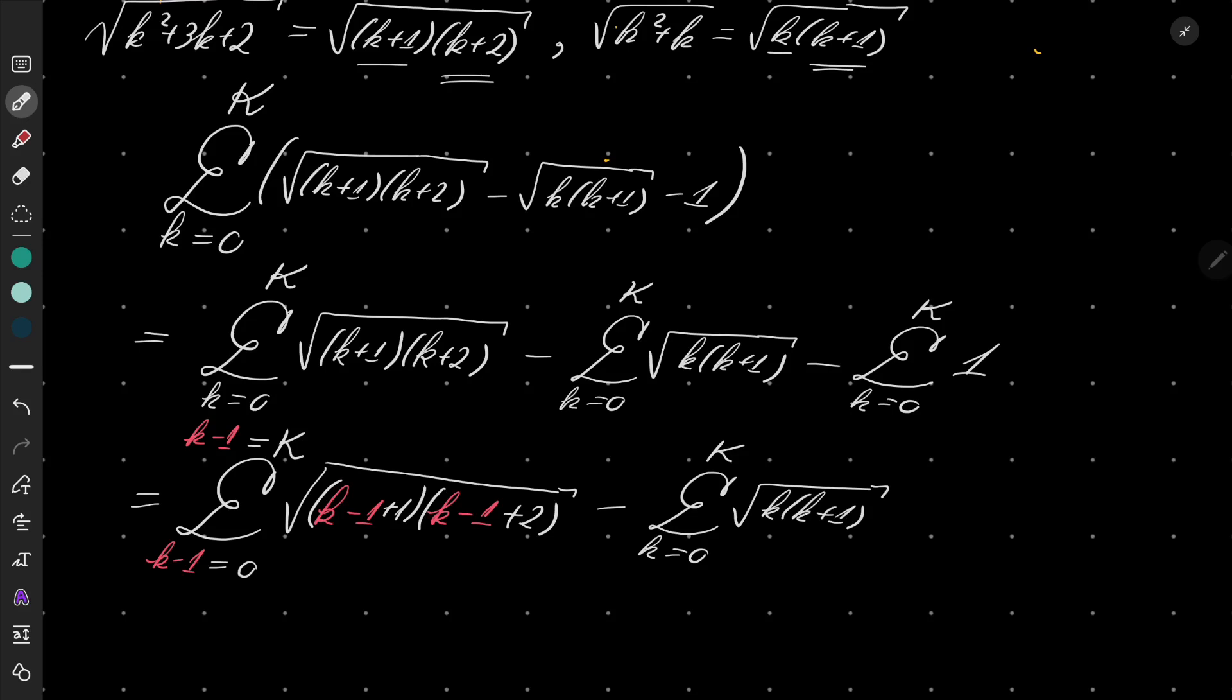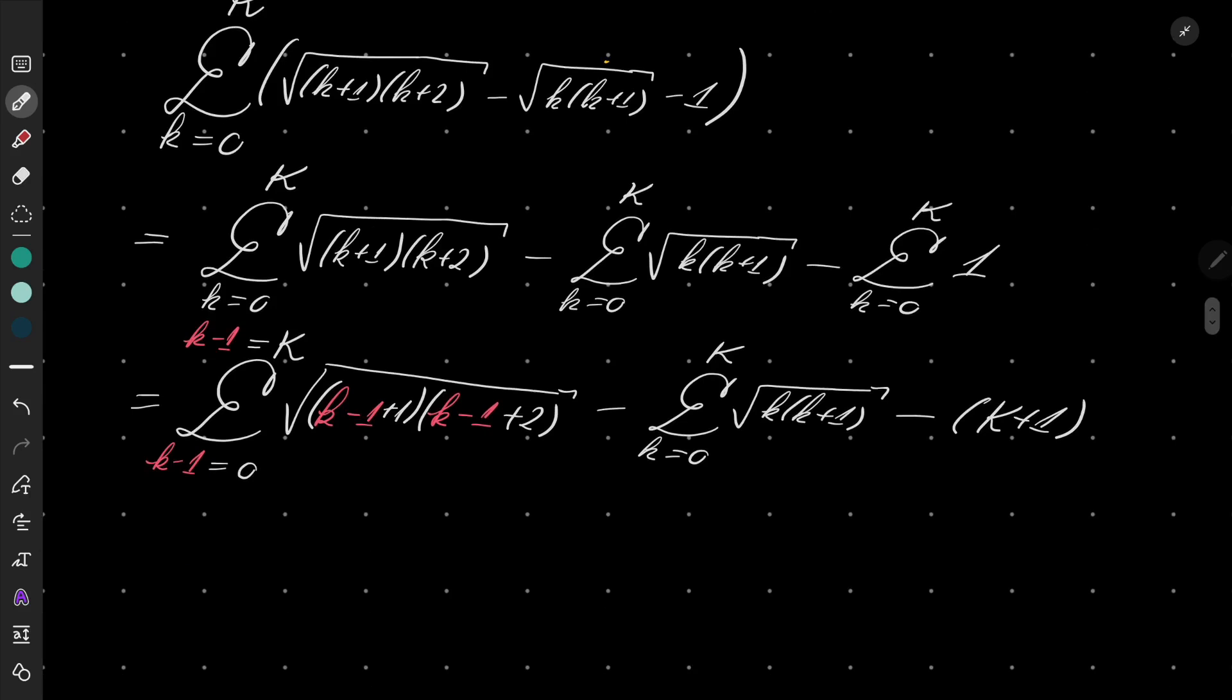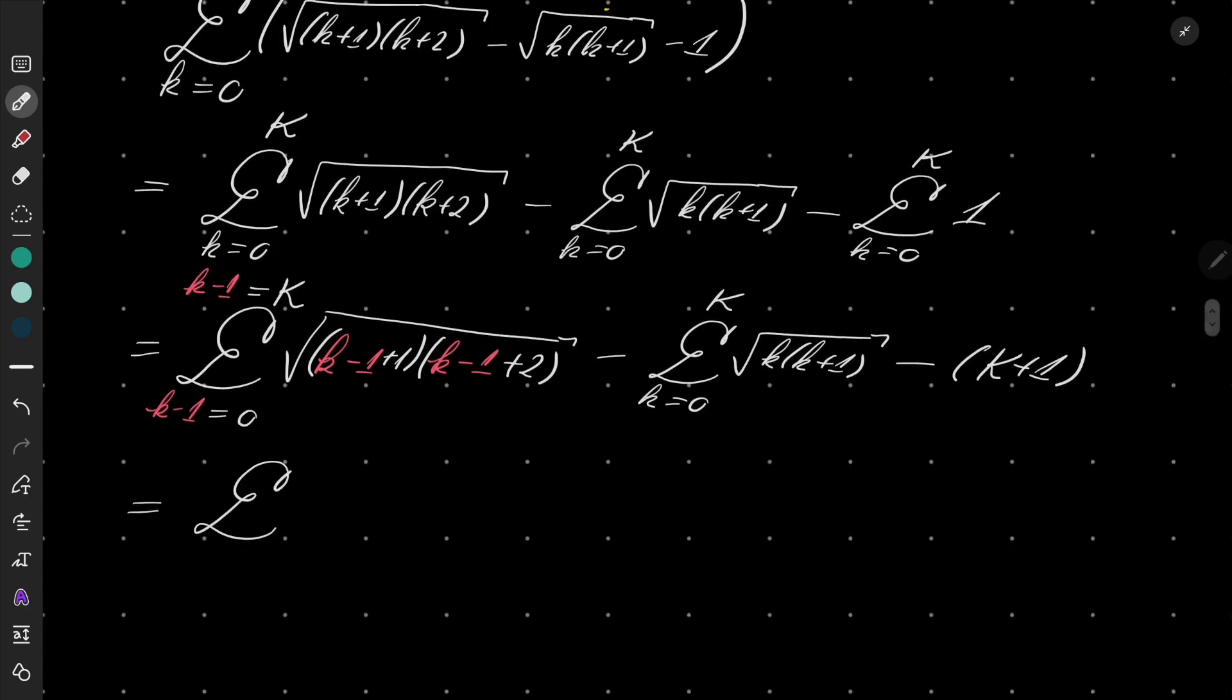And finally the last sum we are summing from k equals 0 to capital K so we have just capital k plus 1. First sum goes from 1 to capital K plus 1 of k times k plus 1 minus sum going from 0 to capital K of k times k plus 1 minus k minus 1.